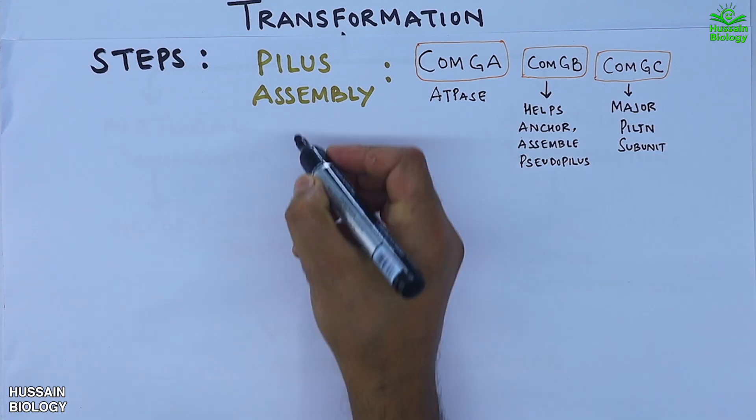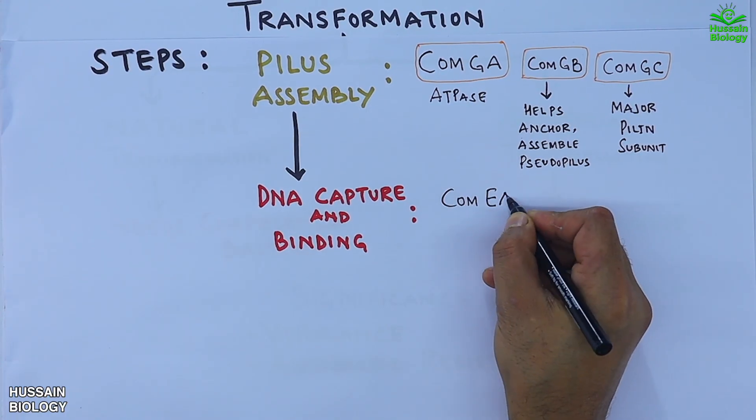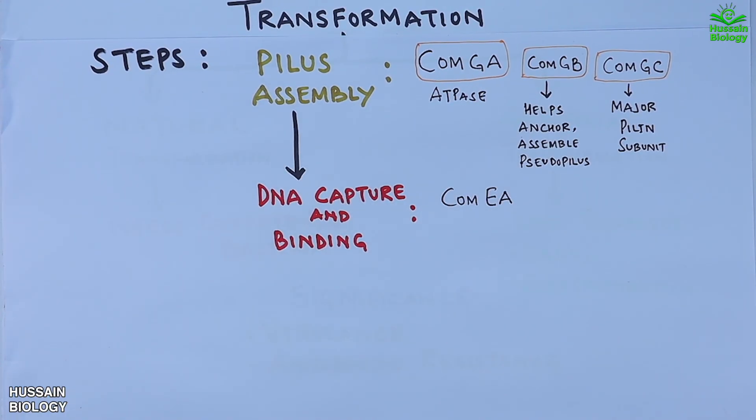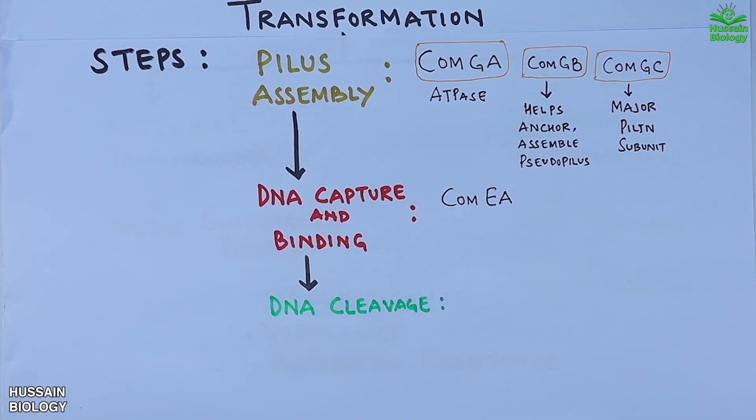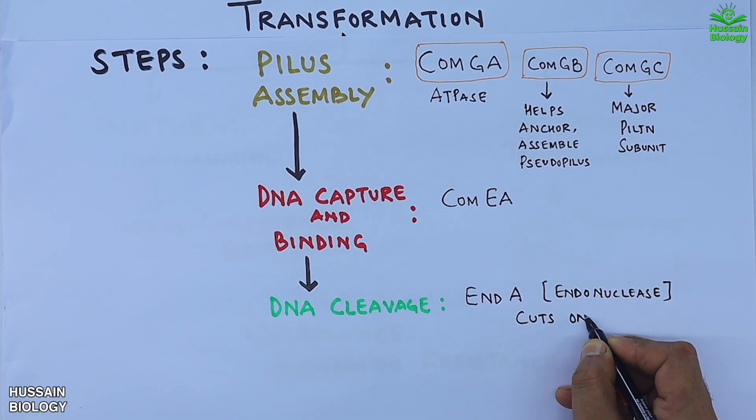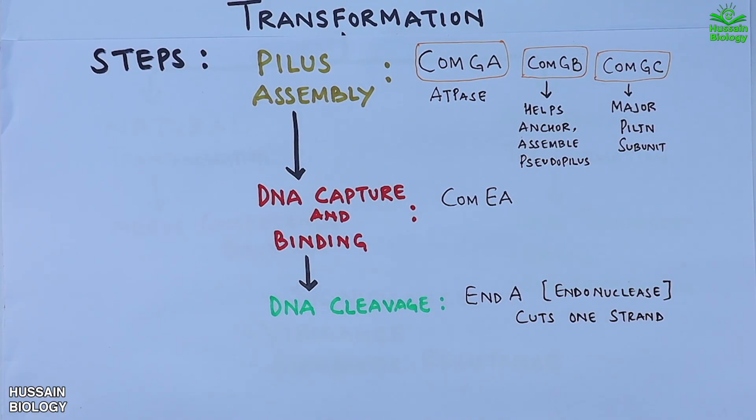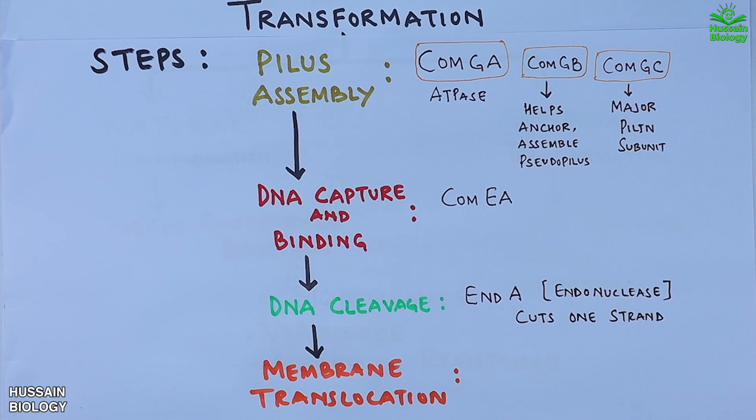Second step is DNA capture and binding, mediated by ComEA. ComEA acts like a DNA catcher that grabs foreign DNA and hands it off for entry into the cell. Third step is DNA cleavage mediated by EndA protein, endonuclease A, which cuts one strand of DNA. Fourth step is membrane translocation done by ComFA, which provides ATP-driven translocation of single-stranded DNA via the ComEC pore.